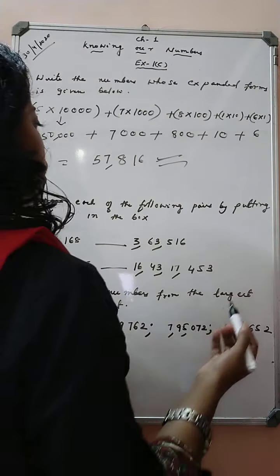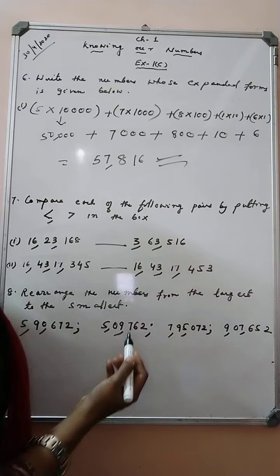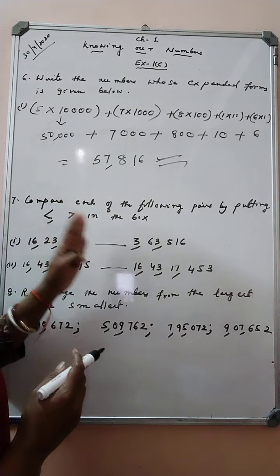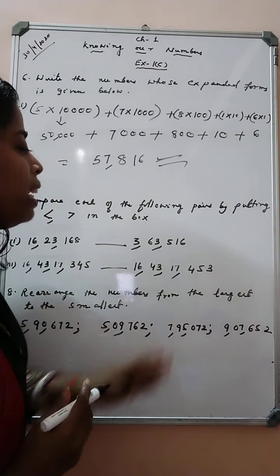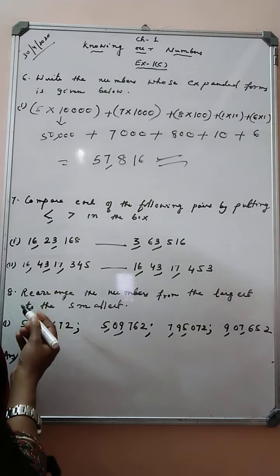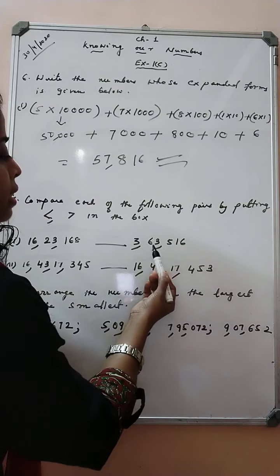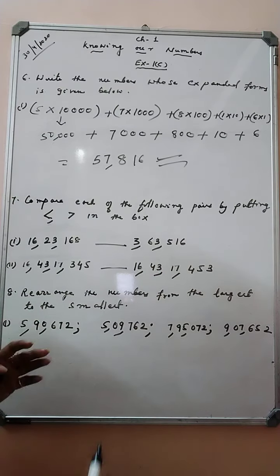Compare each of the following pairs by putting the symbols in the box. We have to compare the numbers and we have to put the symbols accordingly. Our first question is 16,23,168 and 3,63,560. It's very simple students.